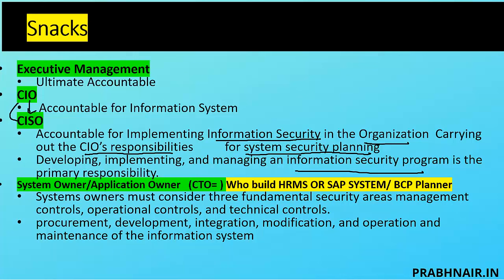The CISO is responsible for security planning. He develops, implements, and manages the information security program — that is his primary responsibility. He gets these tasks done through the information security professional, but he is the one answerable to CIO for the security strategy, security planning, and security program. Then we have the system owner and application owner.